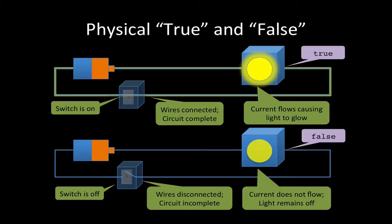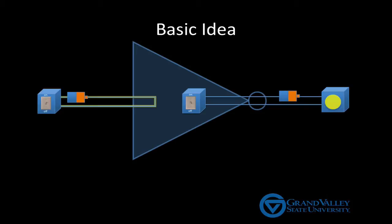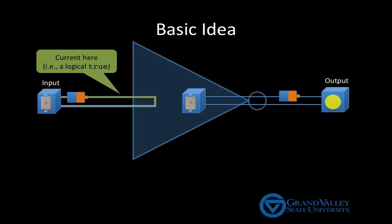Now, let's see how to build a NOT gate based on these states. Here's the basic idea. We're going to use two circuits. The one on the left represents the input of the NOT gate, and the one on the right represents the output.